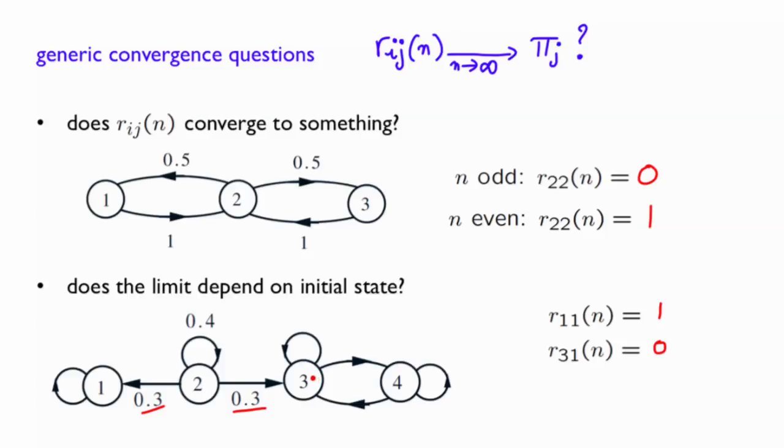So, what you have is that R21 of n will be 1 over 2.